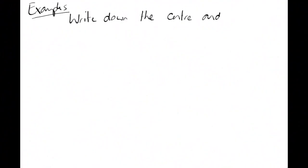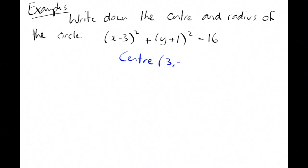Write down the centre in the radius of the circle x minus 3 all squared plus y plus 1 all squared equals 16. Well, we can just write down the centre as 3 minus 1. It's the solution of the bracket. It's the opposite of the number in the bracket.